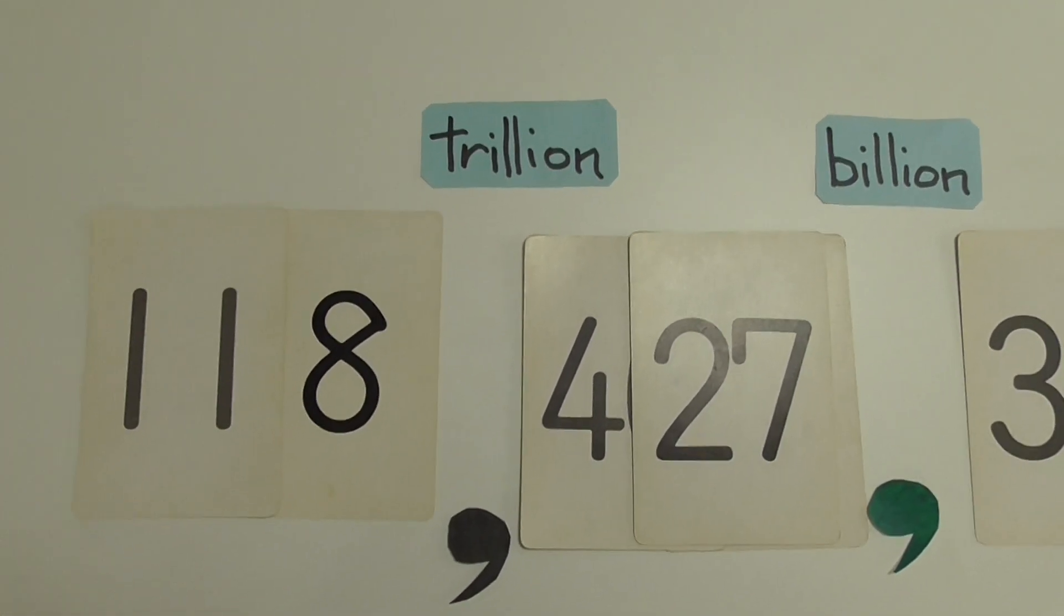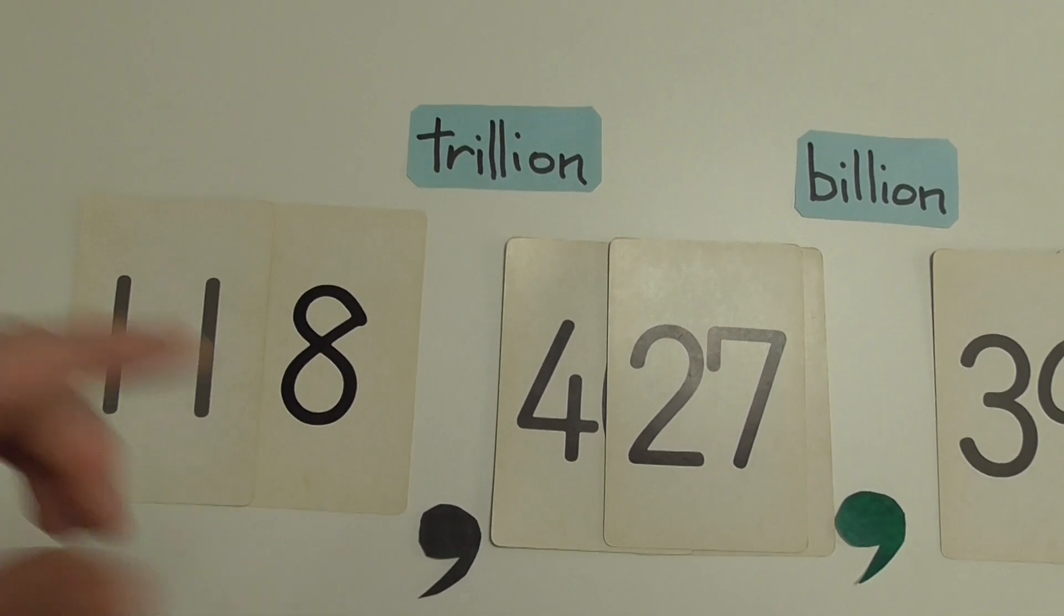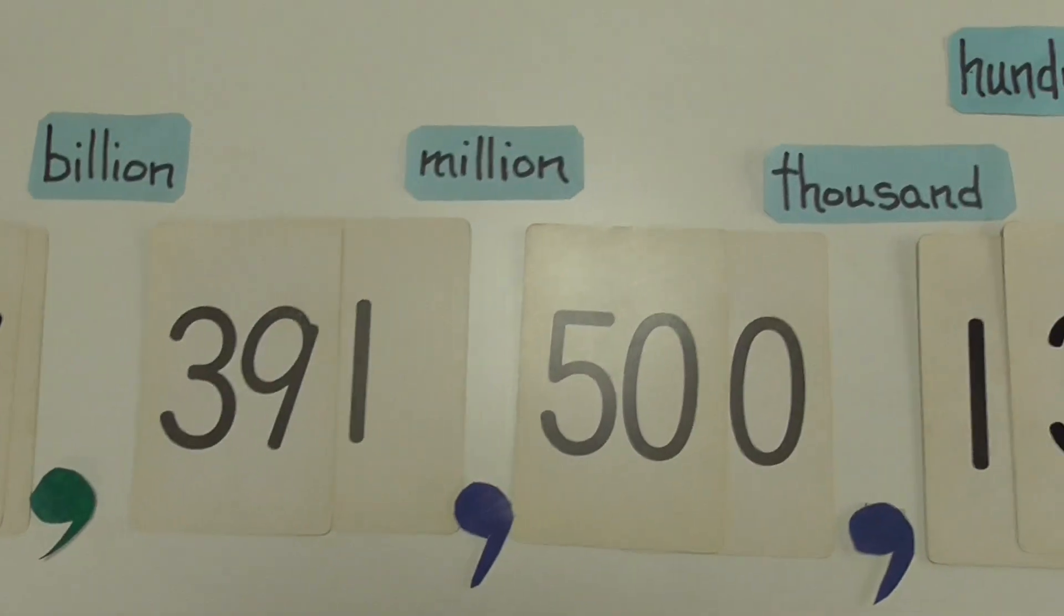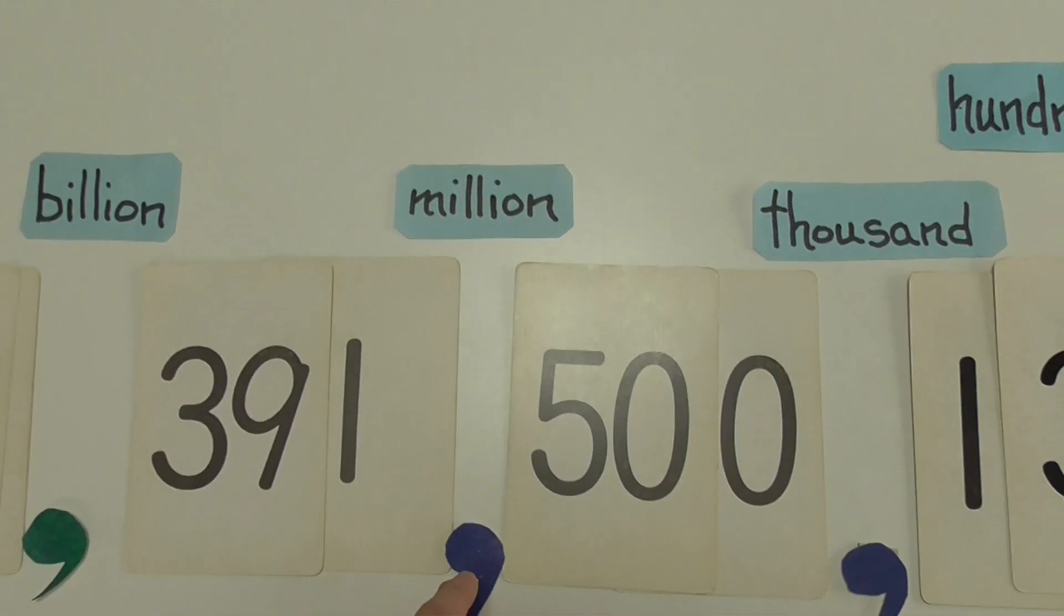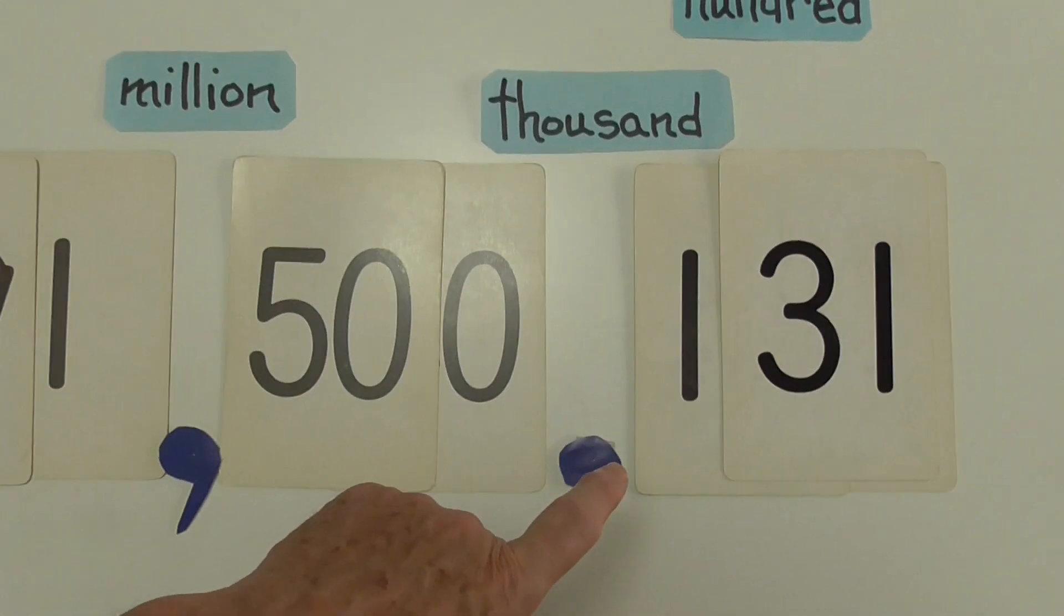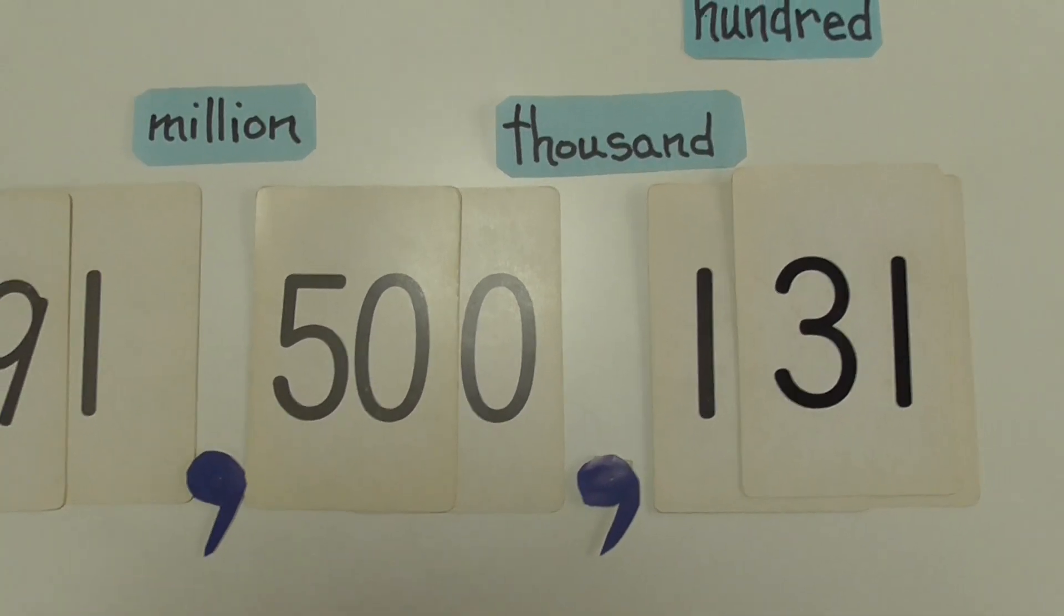Government money. Government money is trillion. Right? Company money is billion. Many people's houses are a million. Cars are a thousand. Right?